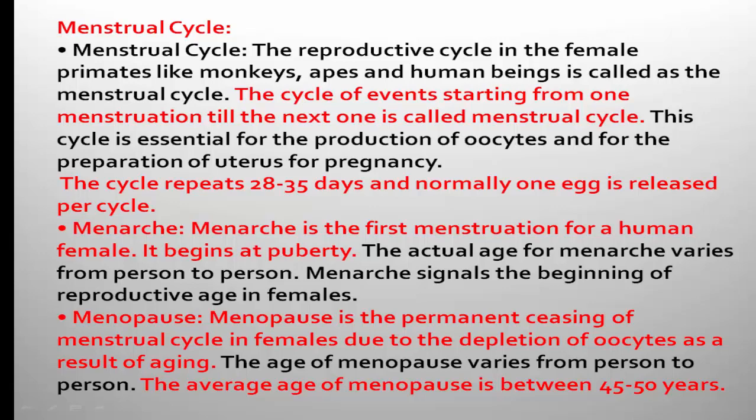The primary follicle gets transformed into secondary, secondary to tertiary, and tertiary to mature graafian follicle. The mature follicle — the graafian follicle — is surrounded by two layers: theca externa and theca interna. The cavity present in the graafian follicle is called antrum. Under the influence of pituitary hormone LH, the egg is released from the graafian follicle — the process called ovulation.